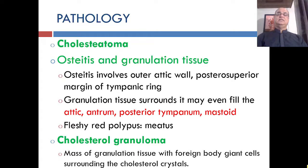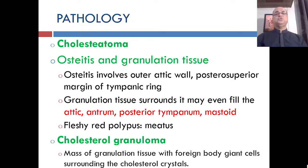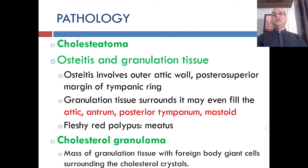The pathophysiology of the disease: cholesteatoma is the hallmark, and in addition there can be osteitis and granulation tissues. These granulation tissues may fill the attic, antrum, posterior tympanum, and mastoid.